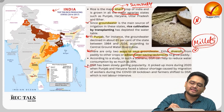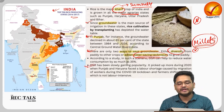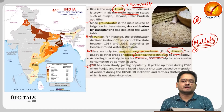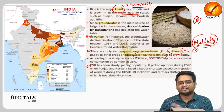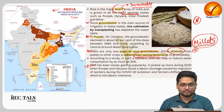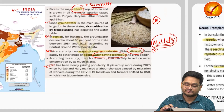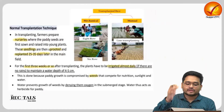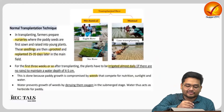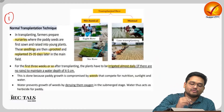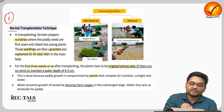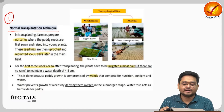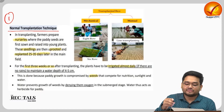DSR is slowly gaining popularity among farmers across the country, particularly because some states are severely stressed with regards to water. Let us look at the very first technique of rice cultivation: the normal transplantation technique.